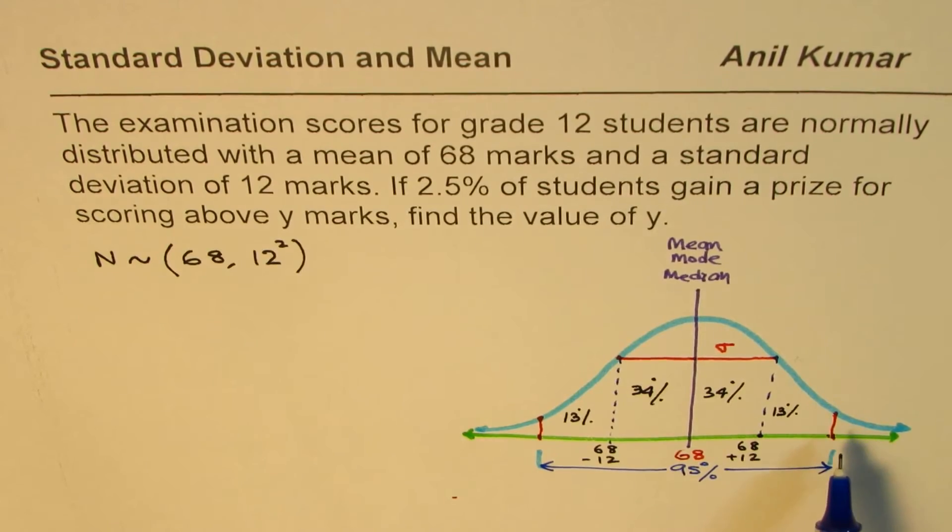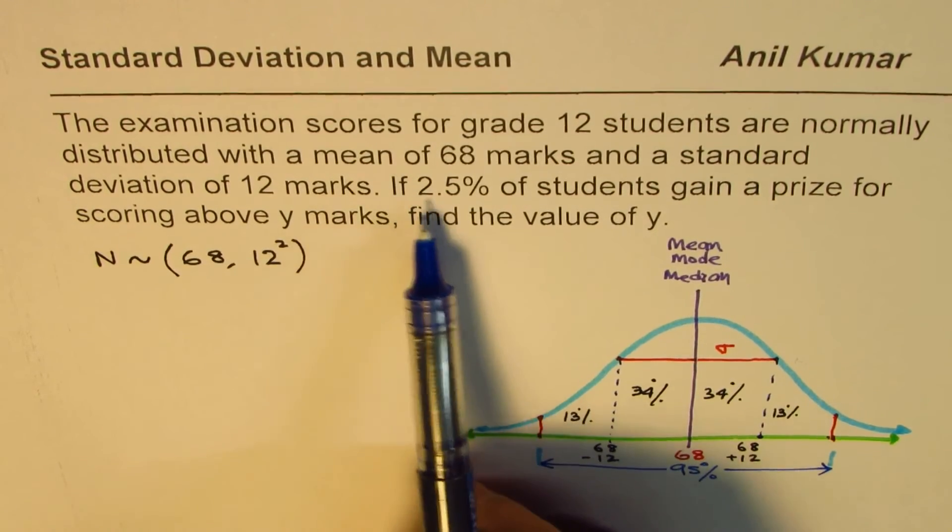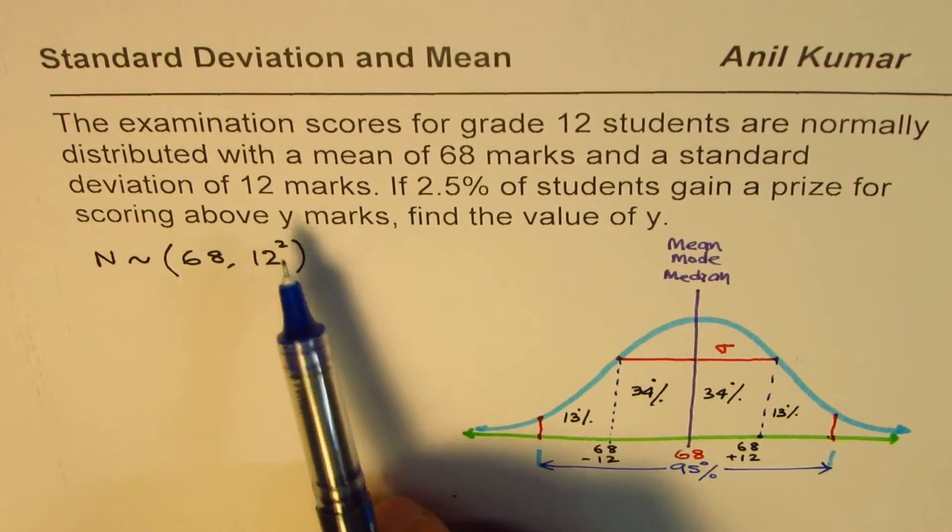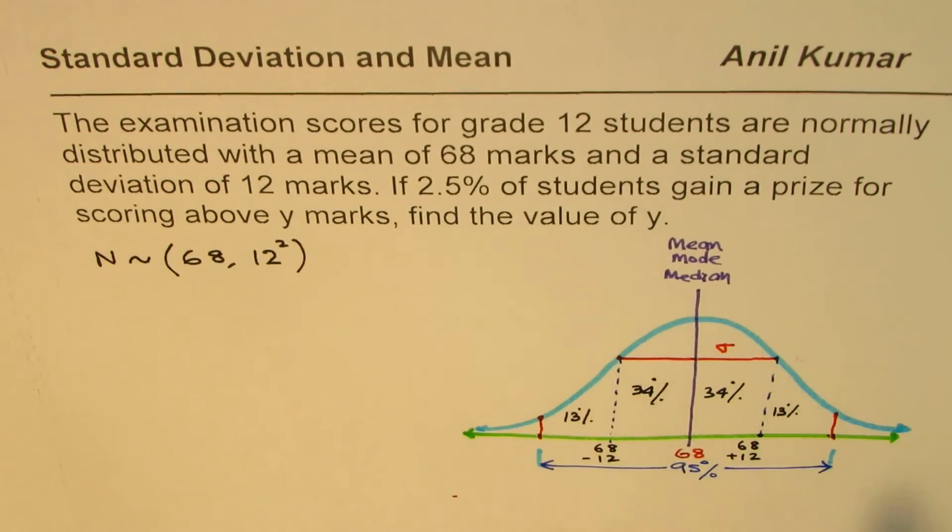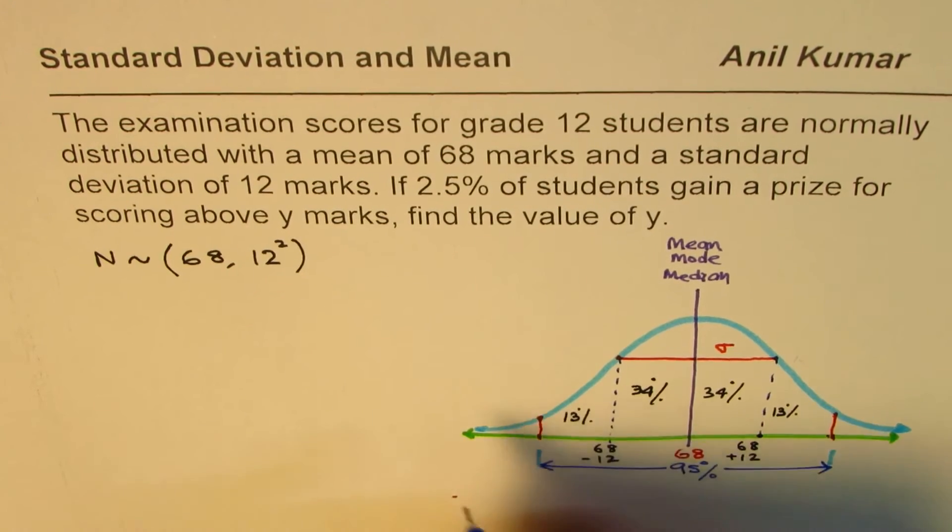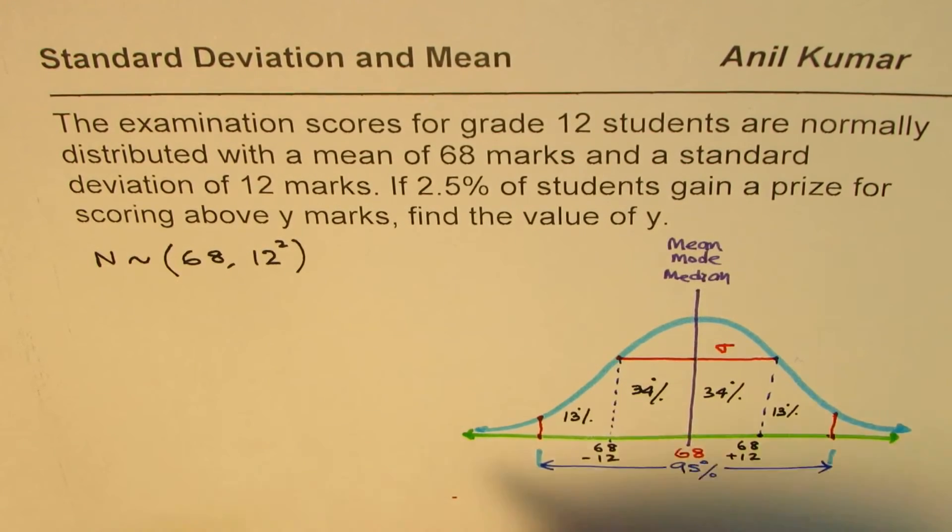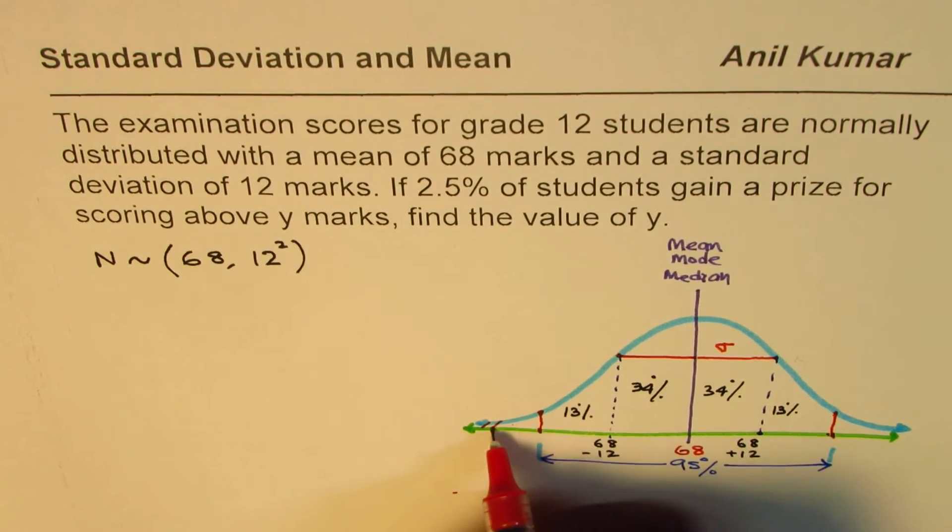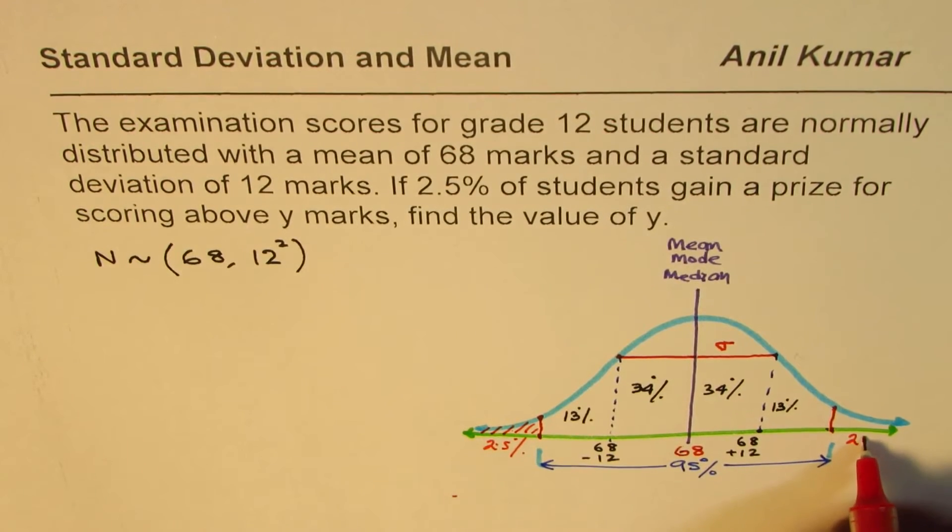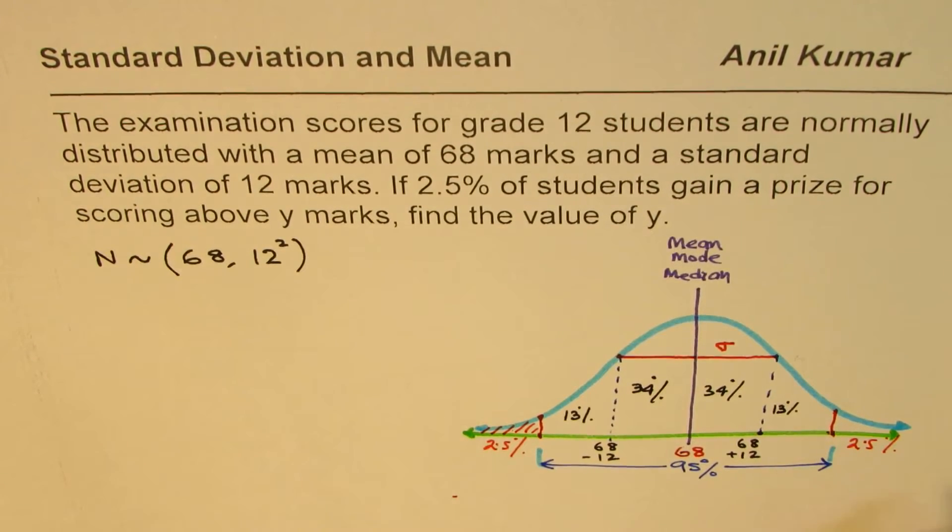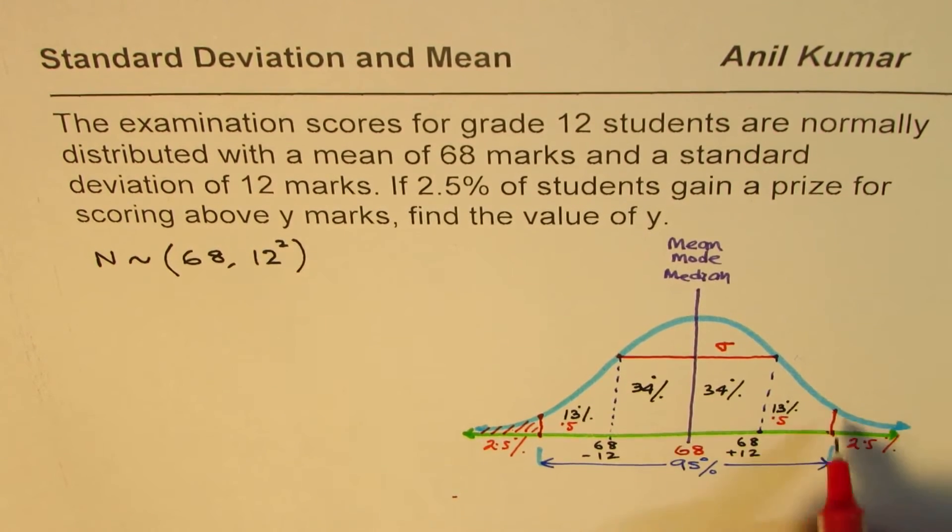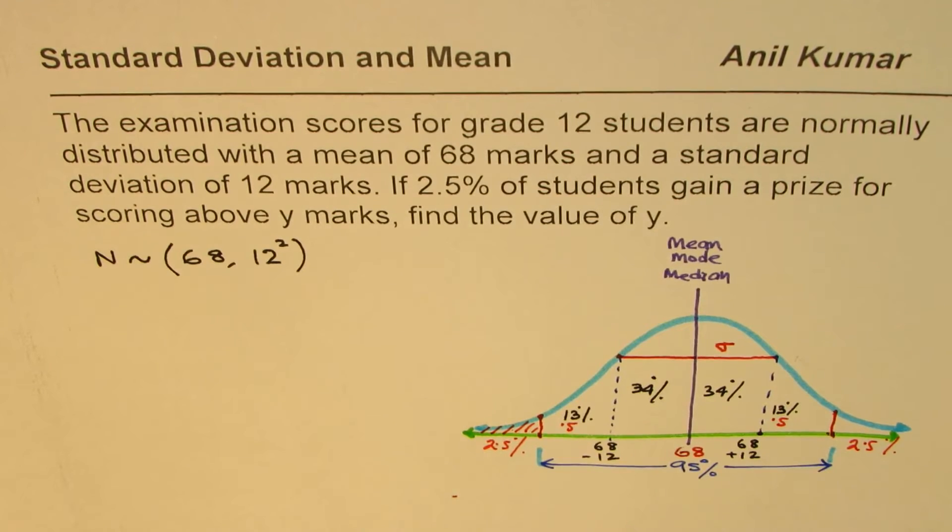Now let's get back to the question. It says if 2.5% of students gain a prize for scoring above y marks, find the value of y. Basically we are saying that this region here, if this is 95%, 5% is here which is distributed like 2.5% here and 2.5% on the upper side. Let me write down 13.5% to make it 95%.